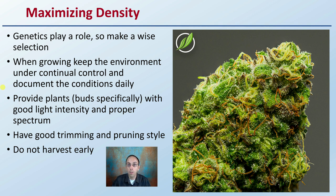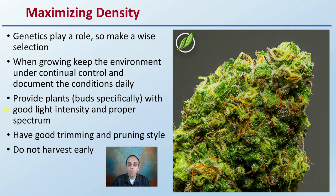If you're growing outdoors, you're limited with the sun. Make sure you're pruning and getting as much light exposure to the bud regions as possible. This applies to both indoor and outdoor growing, and you want to have a good trimming and pruning style — pruning of the actual plant, and trimming of the actual final buds.